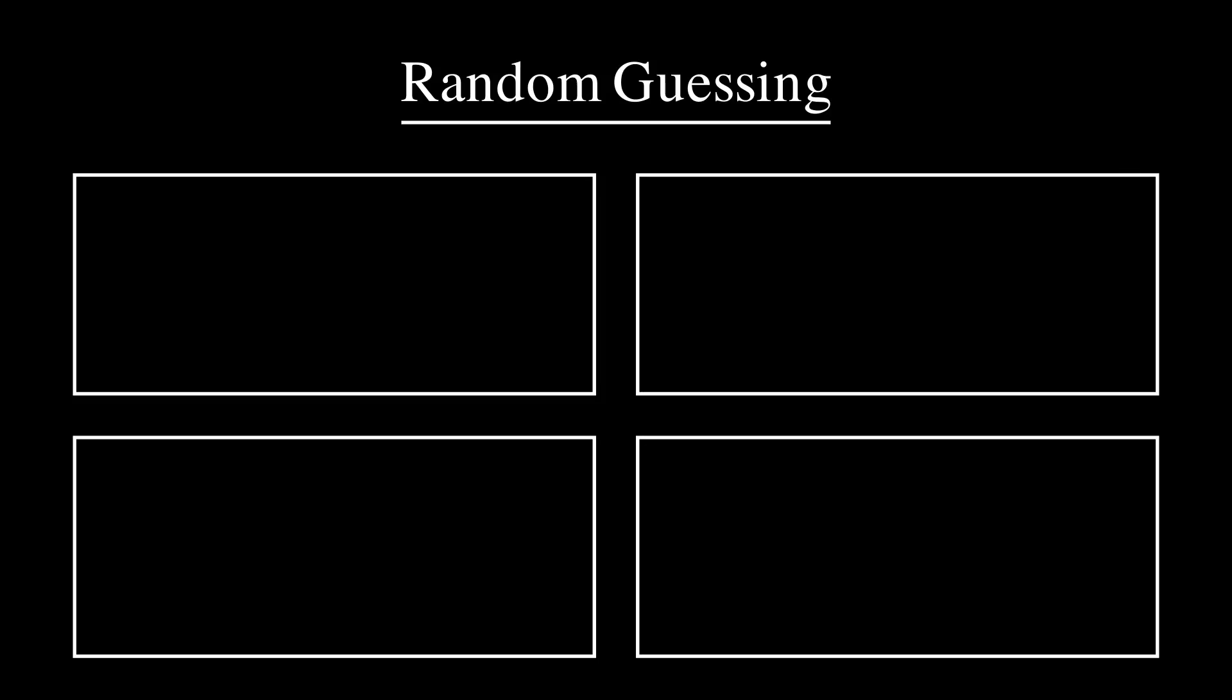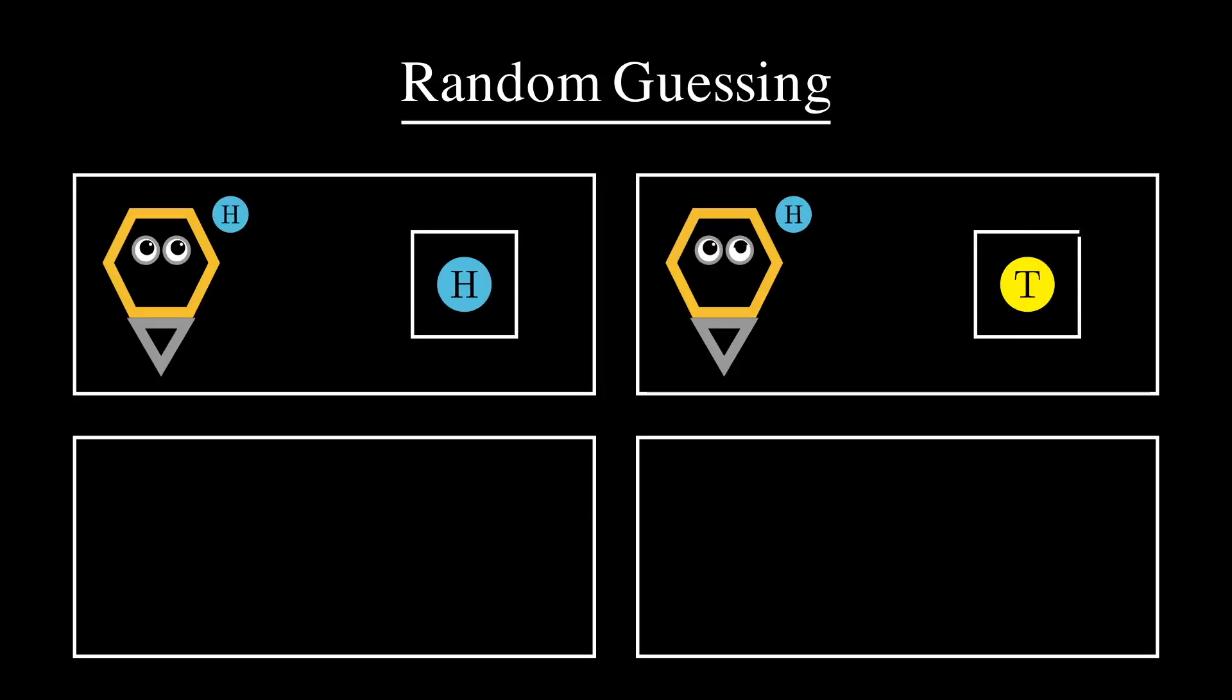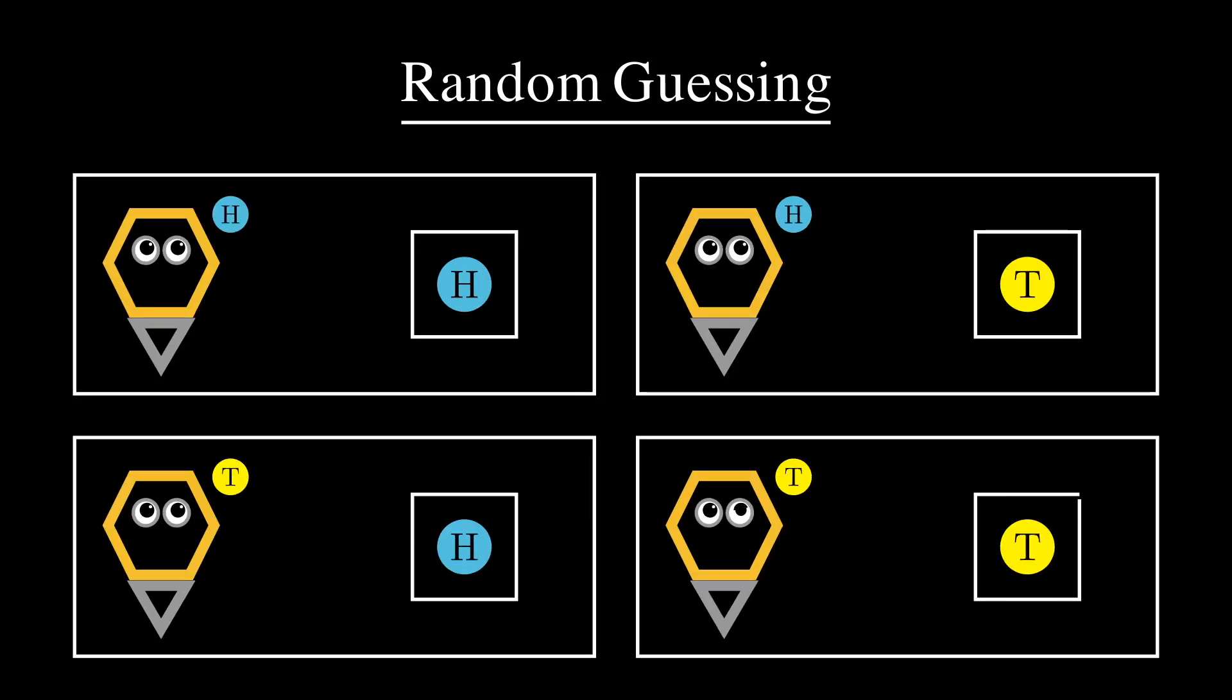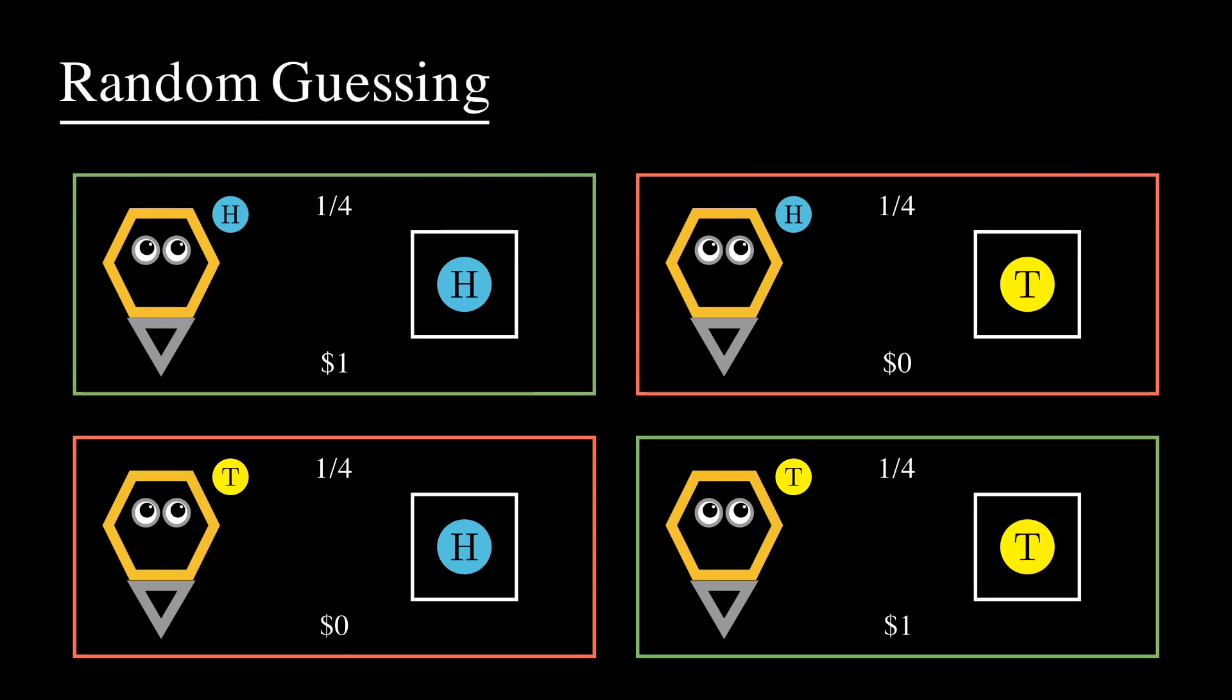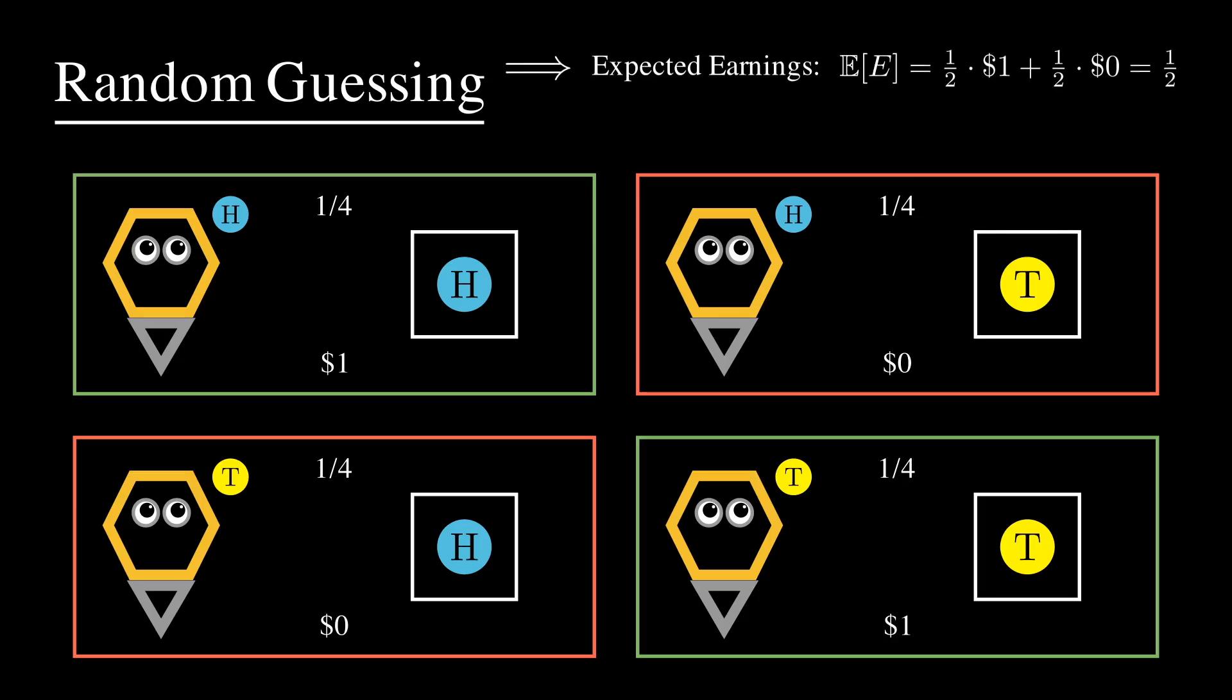How good does random guessing do? Suppose the coin was fair. With probability one-half we earn $1, and with probability one-half we get nothing. So our expected earnings in one round is one-half of a dollar. For m rounds, our expected earnings is m over 2 dollars.